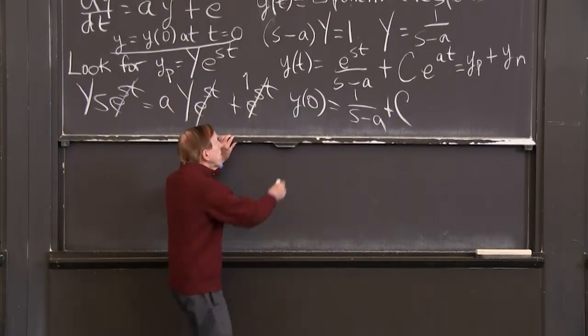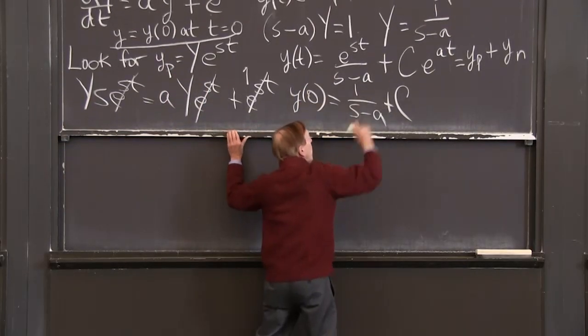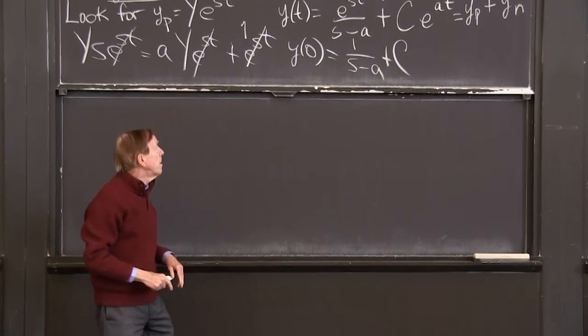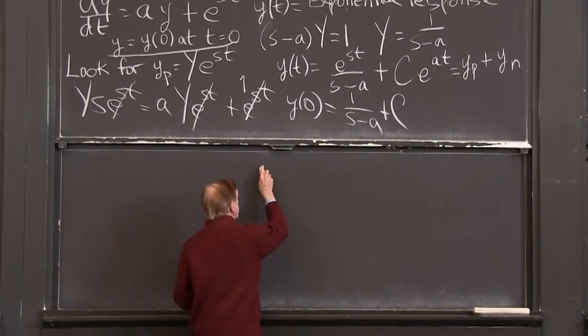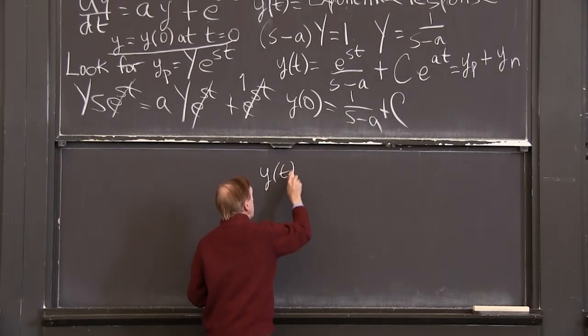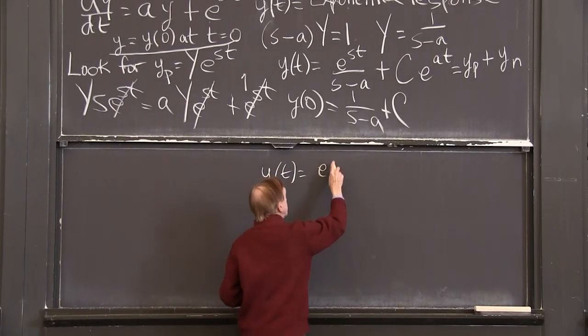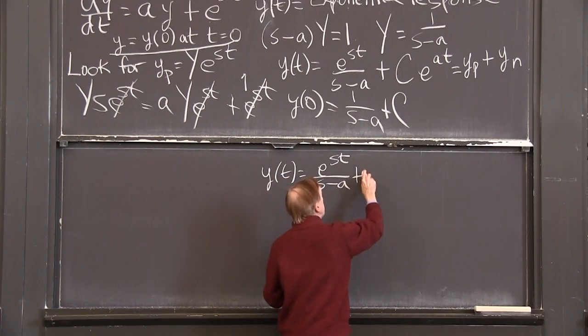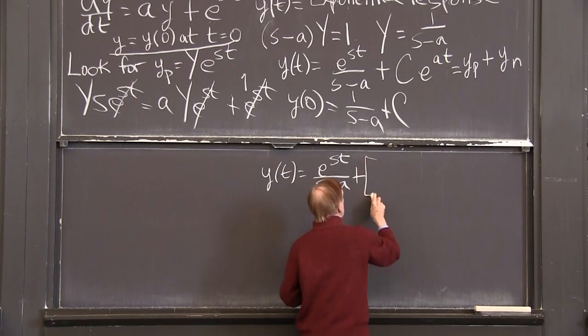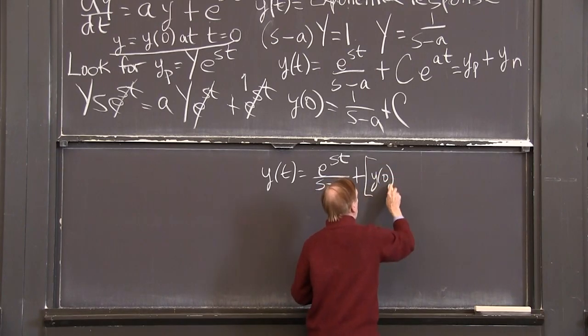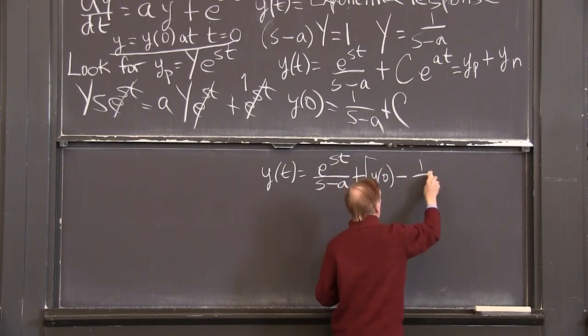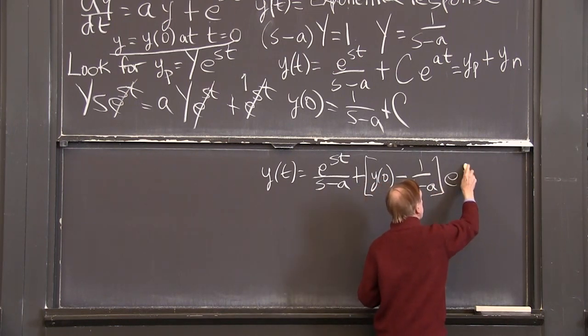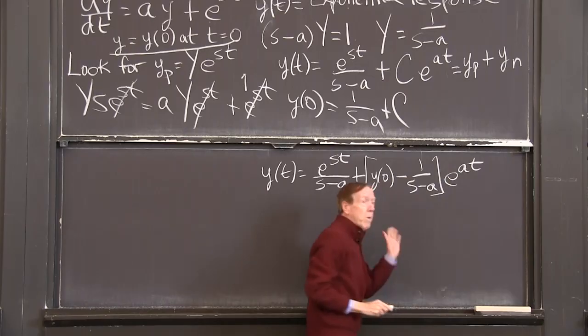Are you ready now for the complete solution satisfying the initial conditions? So now I'm going to... this is the correct form. This tells me what c has to be, so I put it in, and I have the solution. y(t) is e^(st) over (s-a), the easy one, plus c. Now, c is y(0) minus 1 over (s-a). That's what we needed, times e^(at). That's our answer.